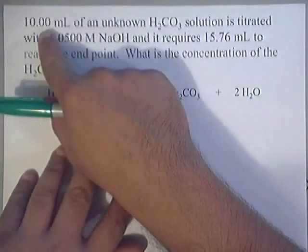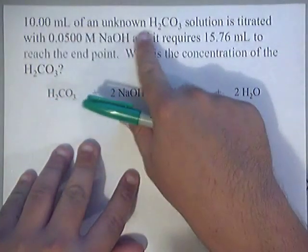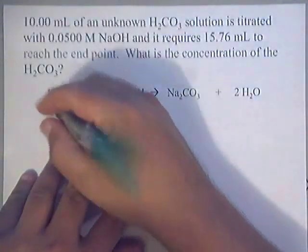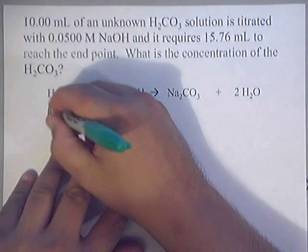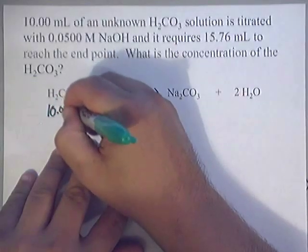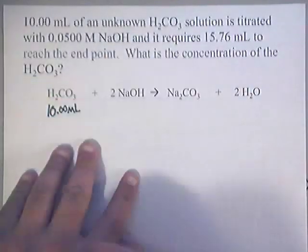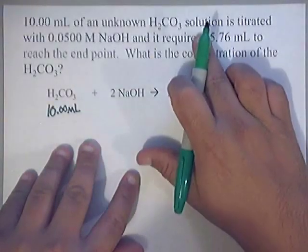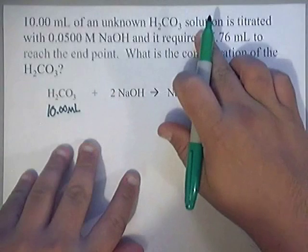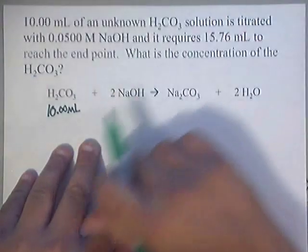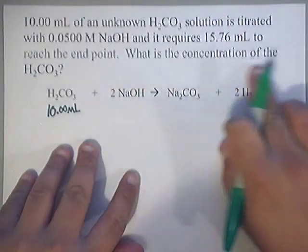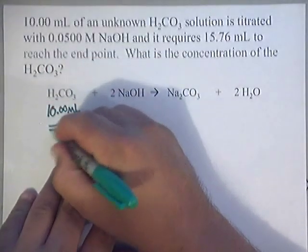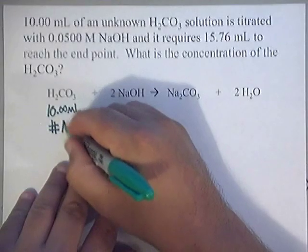First of all, in the question it says that we have 10 milliliters of an unknown H2CO3. That's this one. They gave us information, so I'm going to write down the 10.00 milliliters underneath the H2CO3. And then as I read on, they tell me that it's unknown solution, meaning they don't know the concentration of it. And they also ask me what is the concentration of it. So basically they're going to ask me what's my concentration. So I'm going to put a number sign with a big M on it.